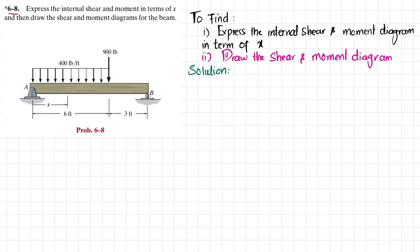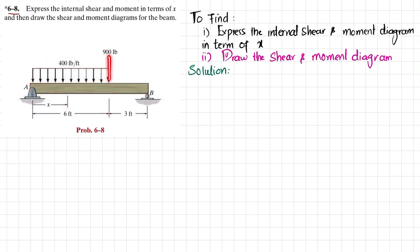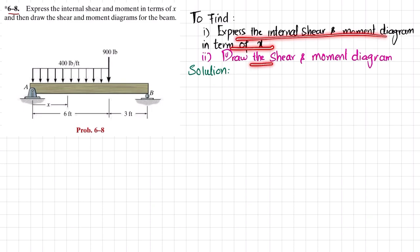Welcome back. Problem 6-8. The statement is to express the internal shear and moment in terms of x, then draw the shear and moment diagram for the beam. This is a simply supported beam AB having a uniformly distributed load of 400 pounds per feet over a length of 6 feet, and at 6 feet there is a point load of 900 pounds. You have to find the shear force and bending moment in terms of x.